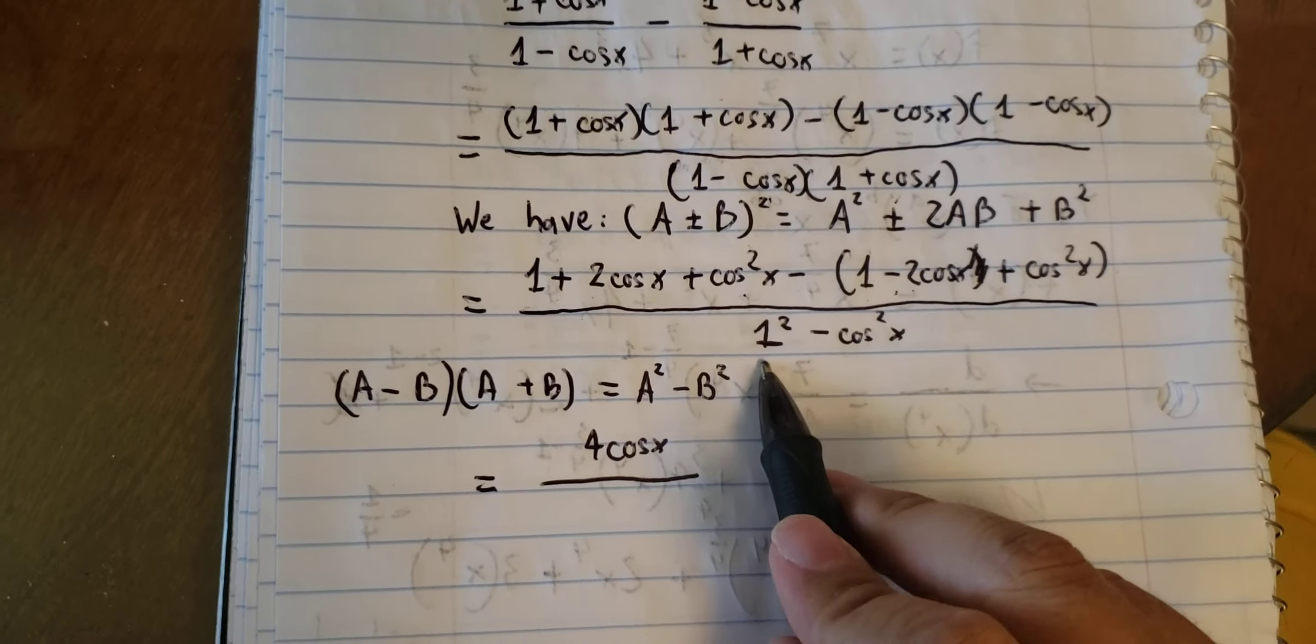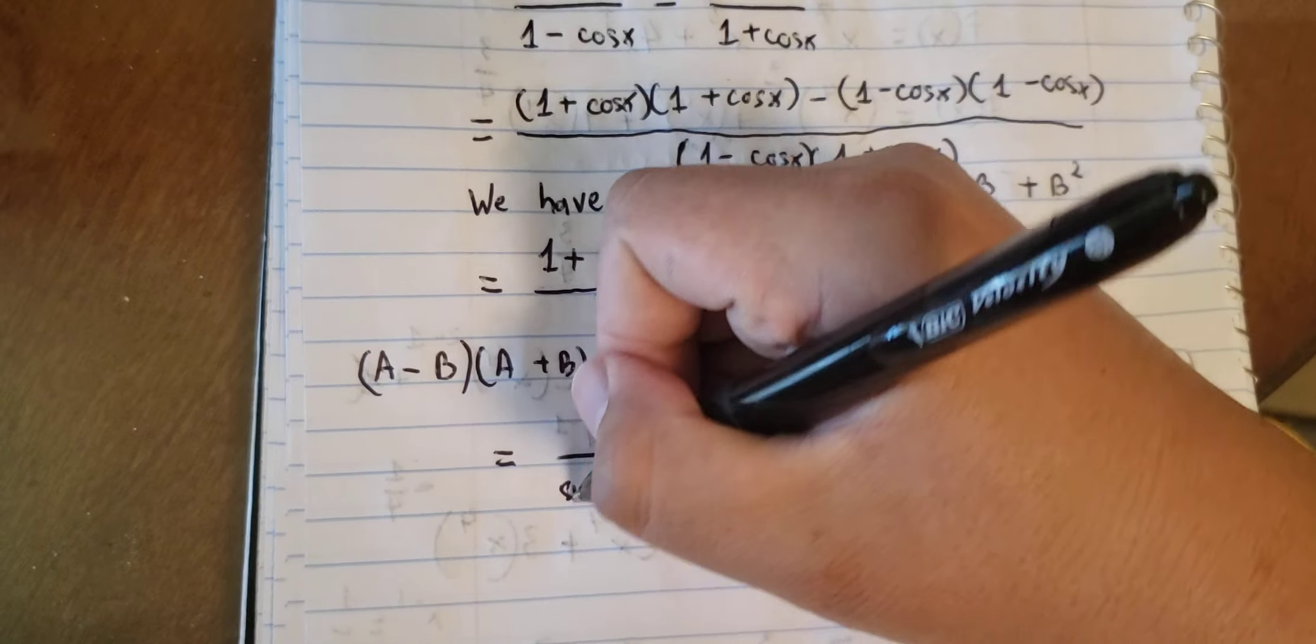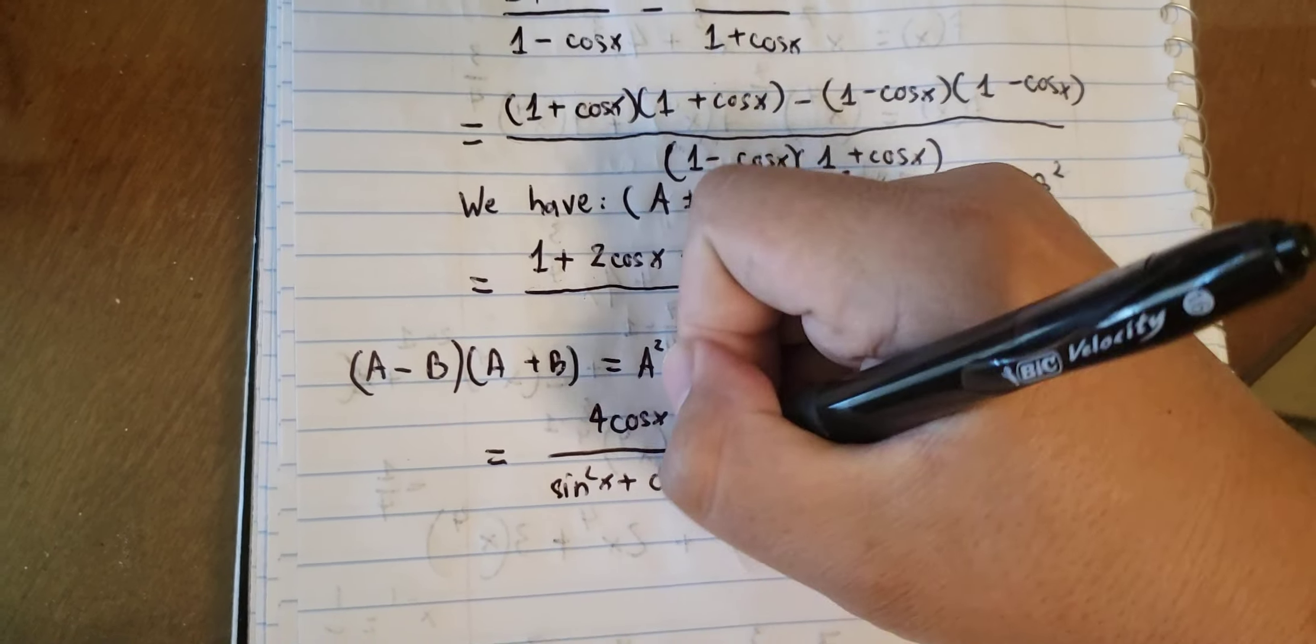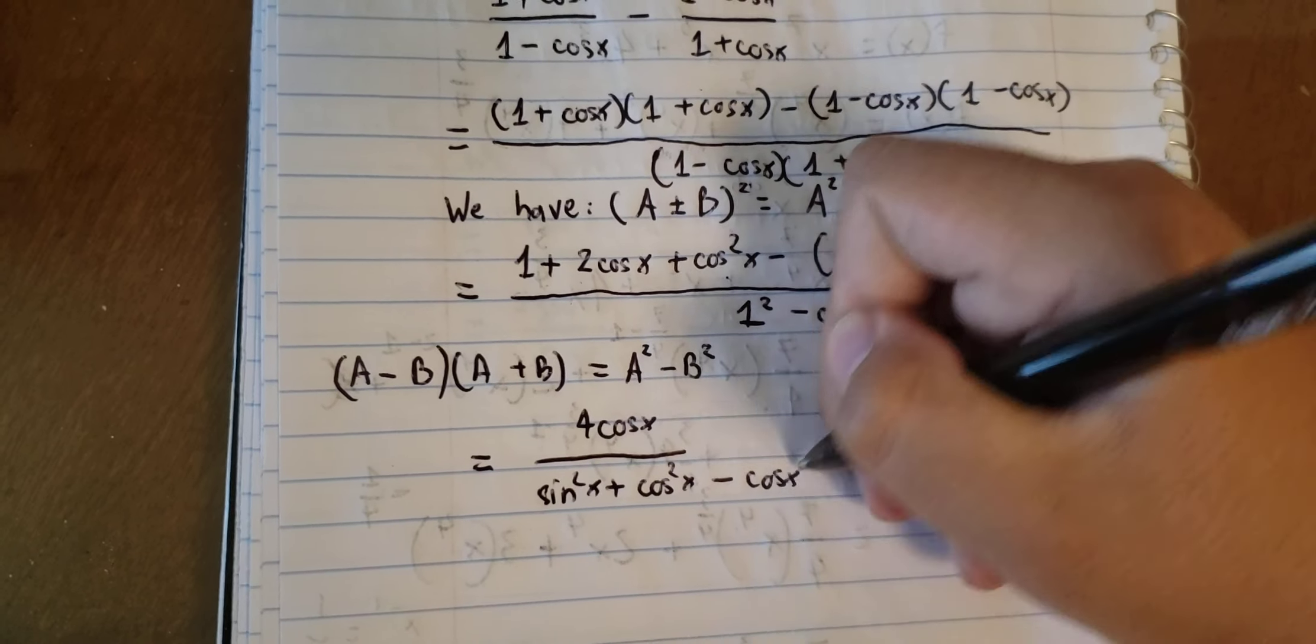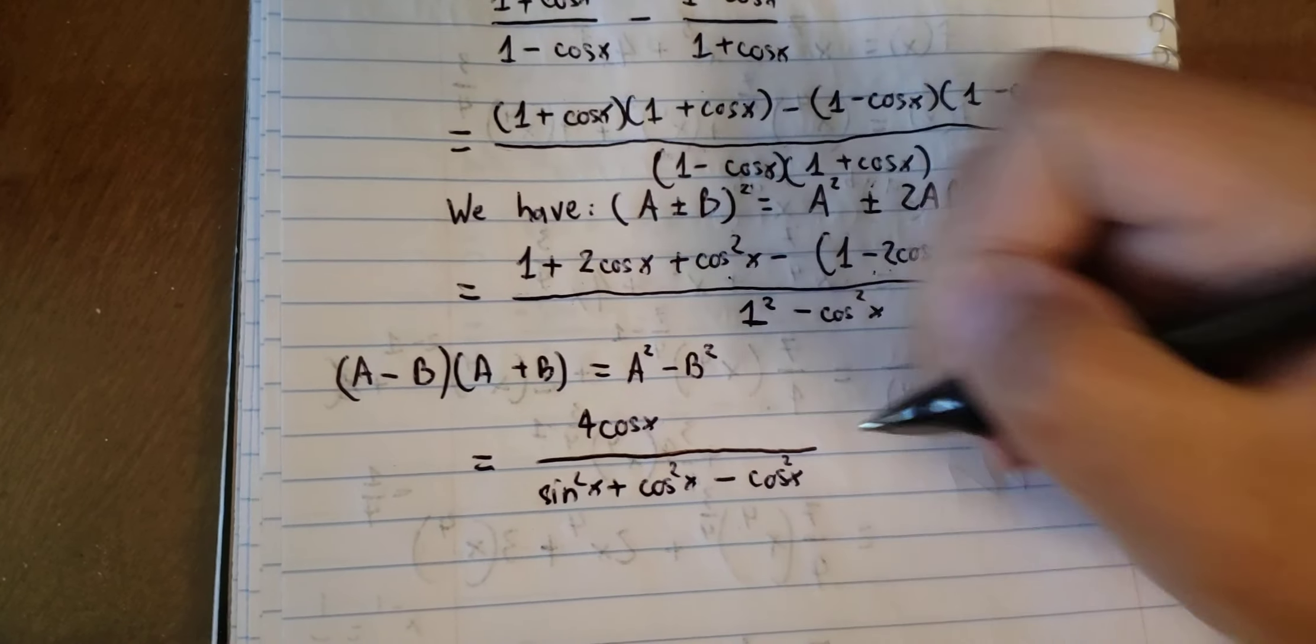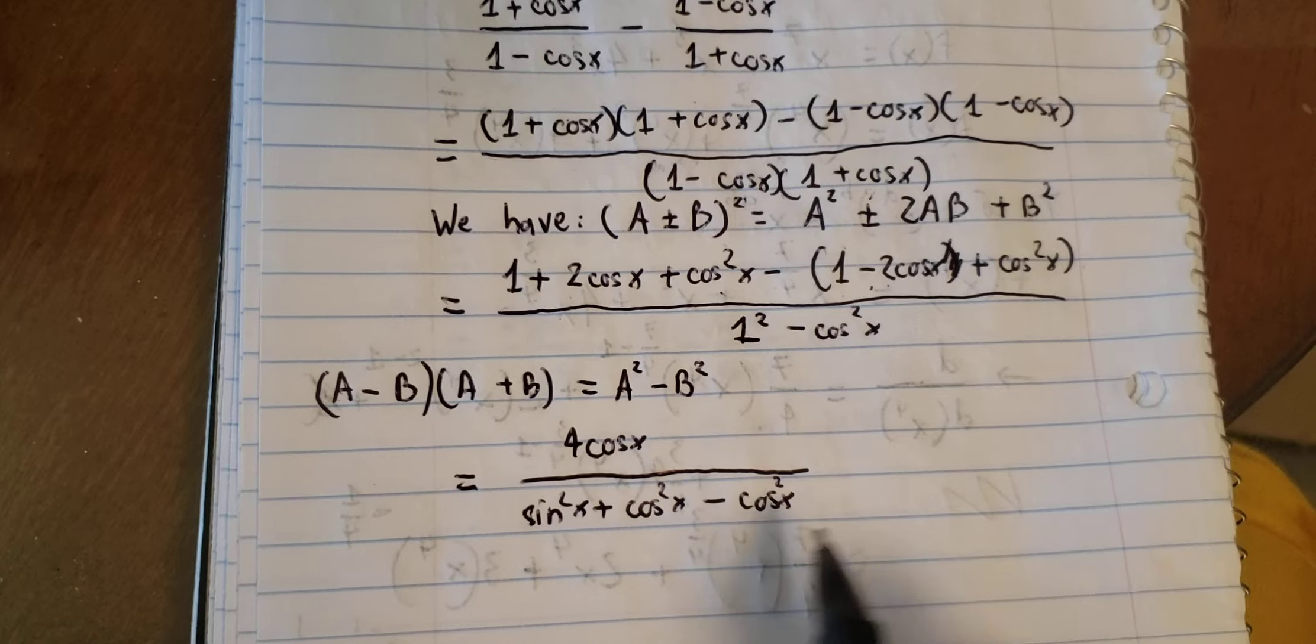The next one, 1, that is sin x squared plus cos x squared. So this one cancels this one.